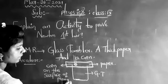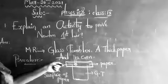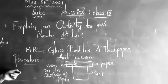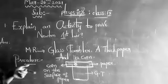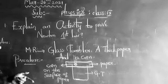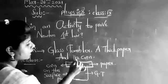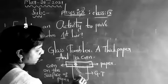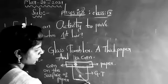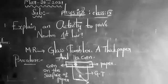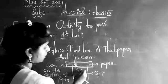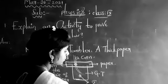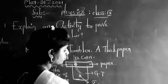So what we have to do here? Now try to drag this paper. What happens? The coin will fall inside the glass tumbler. This is due to gravitational force.